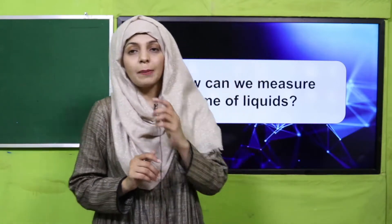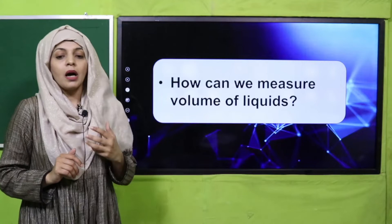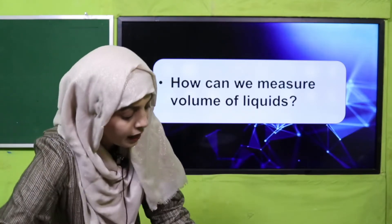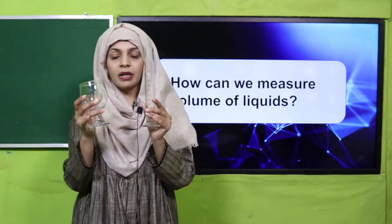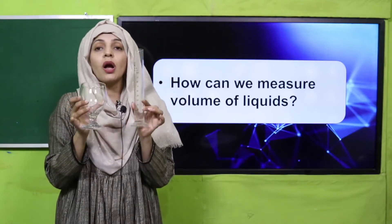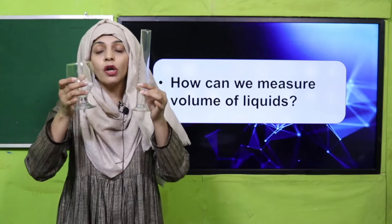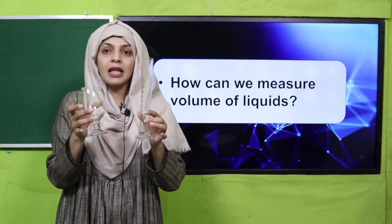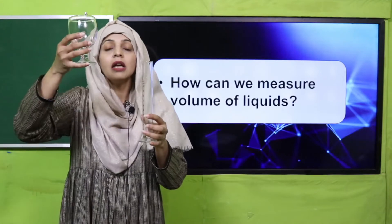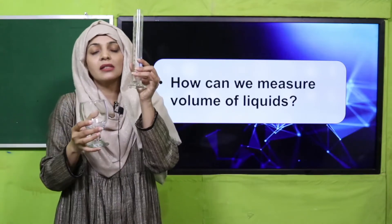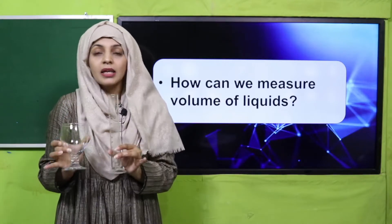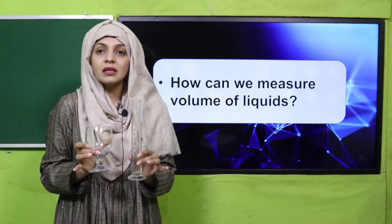For example, I have a glass and a buret — this is called a buret. The mass of both is similar, but the volume of both is different. How much space they take is different. The glass is taking more space, whereas this buret is taking less space. The mass is the same, but what is different is the volume.